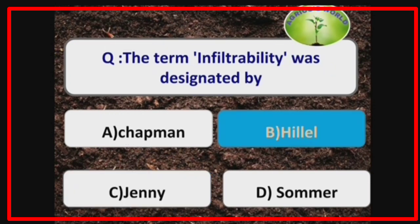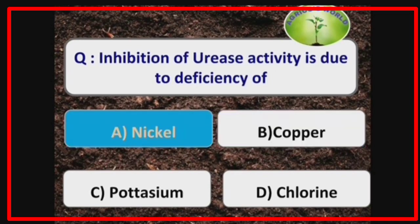The term infiltrability was designated by the scientist Hillel. Inhibition of urease activity is due to the deficiency of nickel.